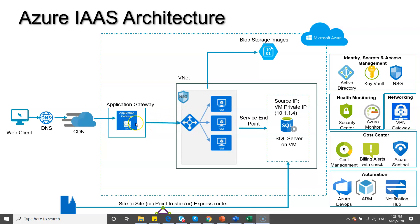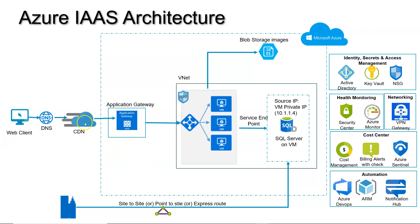To expose your web application to the open world, you use an Application Gateway, which connects to the load balancer and brings traffic to your application. One major advantage of the Application Gateway is the Web Application Firewall (WAF), which protects your complete web application from various threats. If you are following OWASP guidelines, all those threats will be protected.